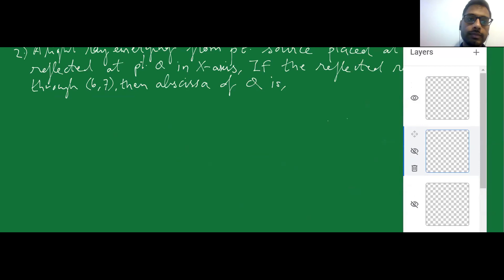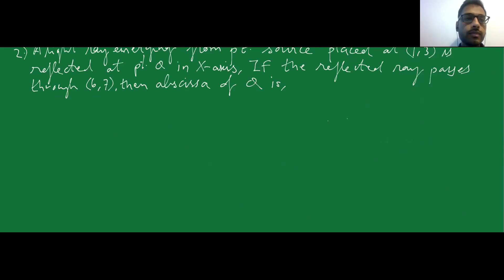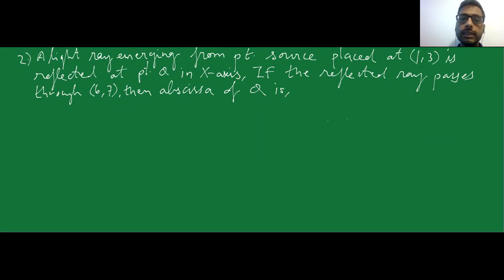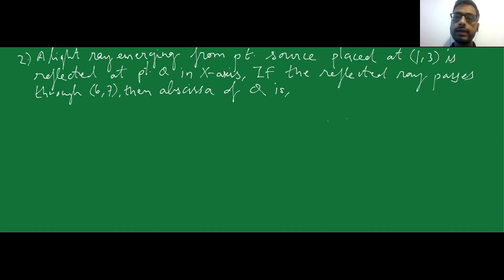Let us see the next question, also asked in the JEE exam. A light ray emerging from a point source placed at (1, 3) is reflected at point Q on the x-axis. If the reflected ray passes through (6, 7), then the abscissa of Q is what?